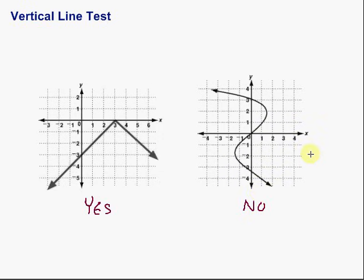Hope this was helpful. We can use both the vertical line test and by looking at the x-values — whether from ordered pairs or a table — to determine if a relation is a function.